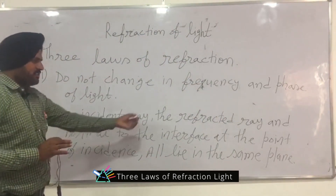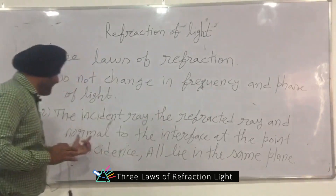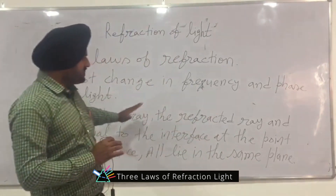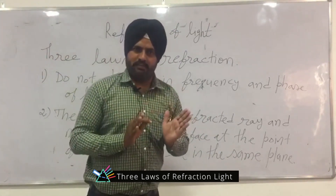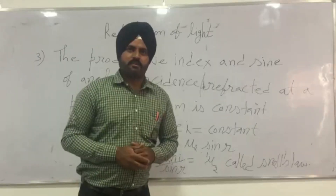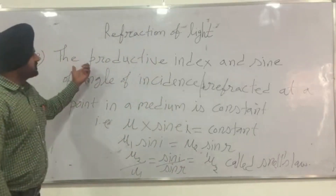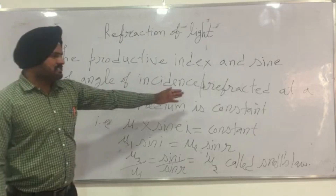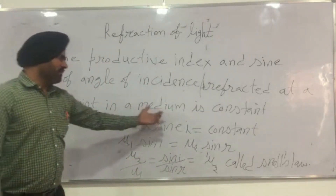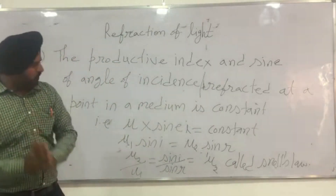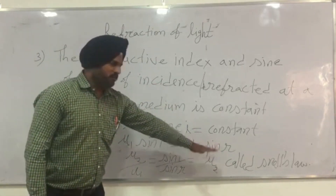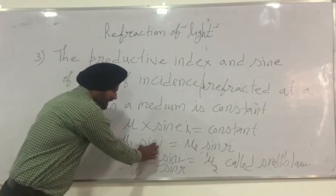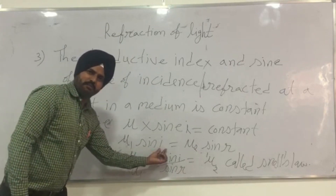The second law is: the incident ray, the refracted ray, and the normal to the interface at the point of incidence all lie in the same plane. The third law is: the product of the refractive index and the sine of the angle of incidence at any point in a medium is constant. That is, mu times sine of i equals a constant. Here, i means the angle of incidence.